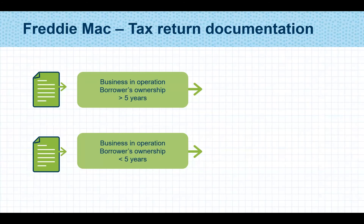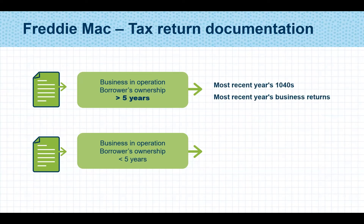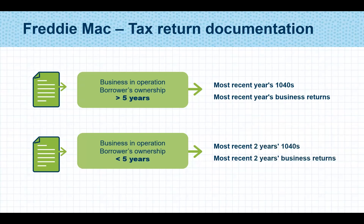Otherwise, you will be tasked with reviewing the most recent two years. So for Freddie Mac, it's all about how long the business has been in operation and how long the borrower has had ownership in that particular business. With a Loan Product Advisor approval, if the business has been in operation and the borrower has had ownership for five years or more, then the most recent personal and business tax returns are needed. If less than five years, then two years of both personal and business returns are required.